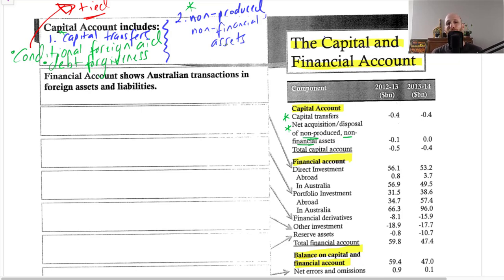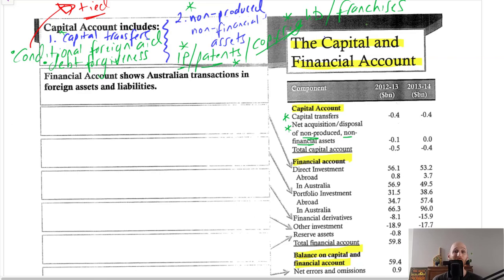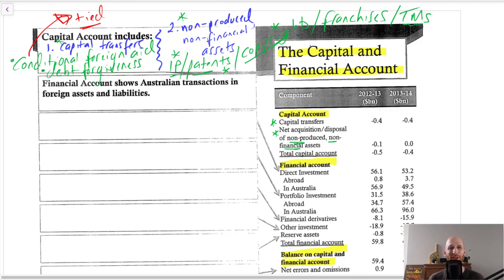Non-produced non-financial assets refer to intangible assets that can have substantial value. These include things like intellectual property, patents, copyrights, franchises, and trademarks. For example, you can't physically hold a trademark, but it is worth money. All of these intangible non-produced non-financial assets are recorded in the capital account.